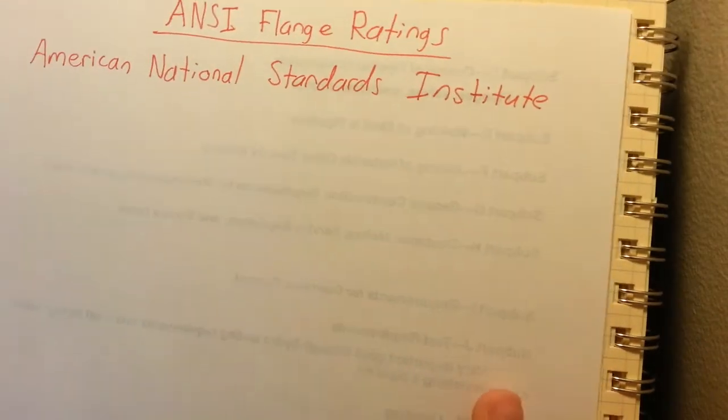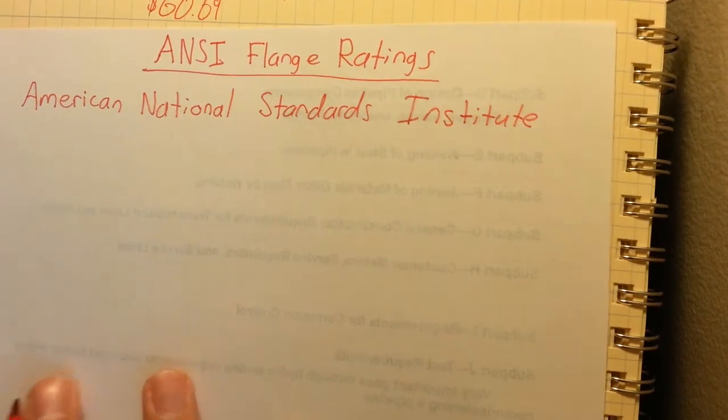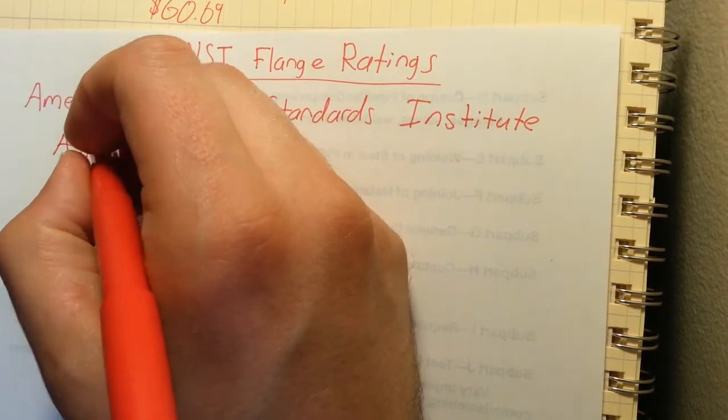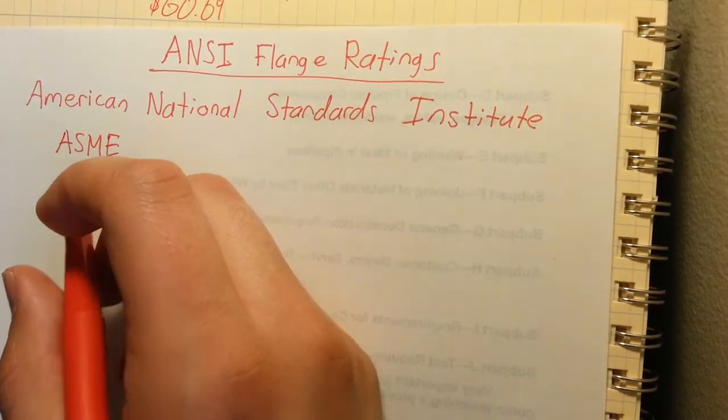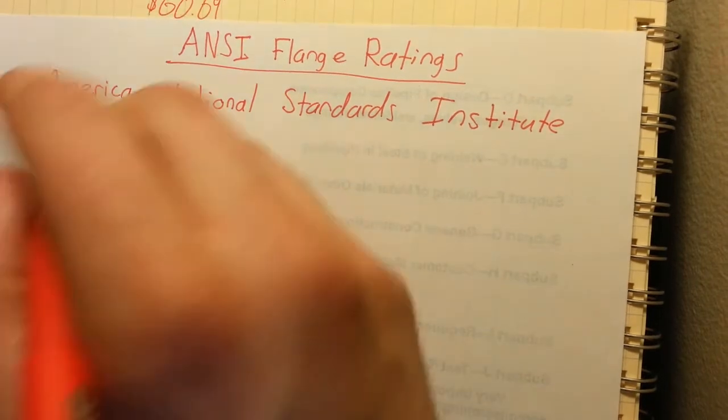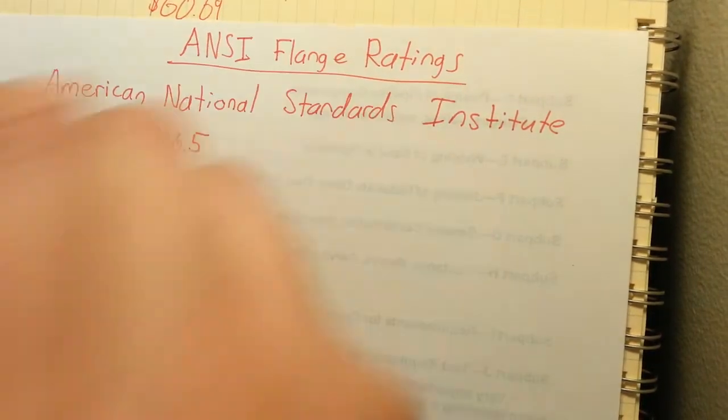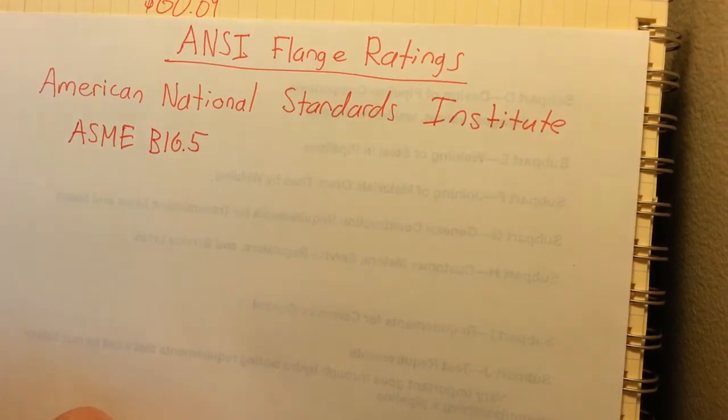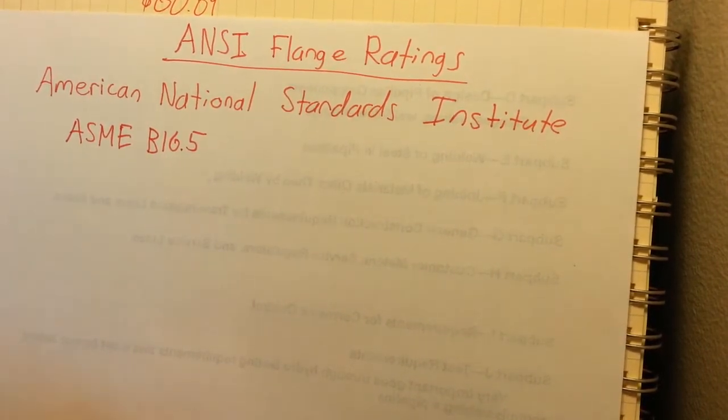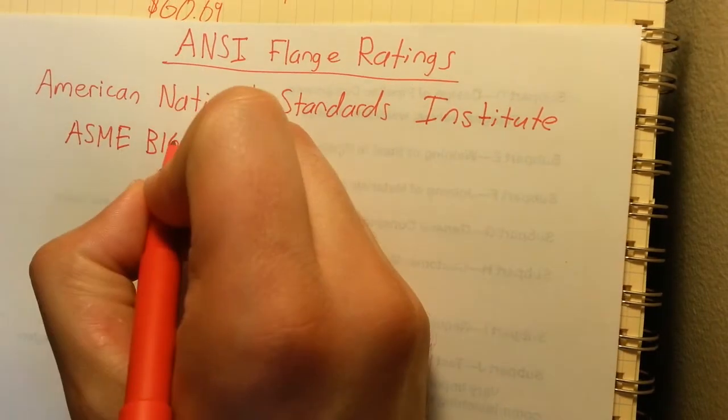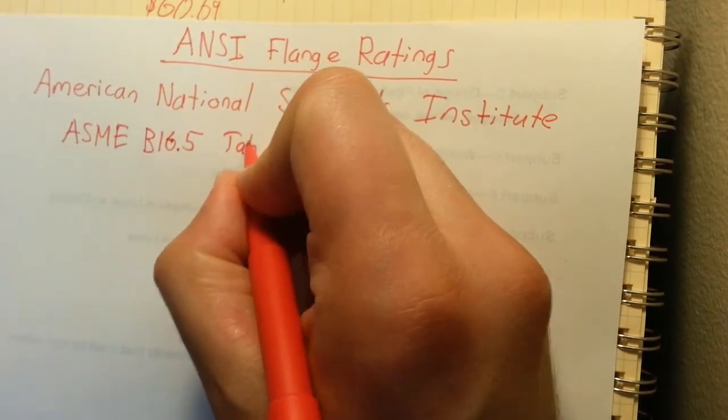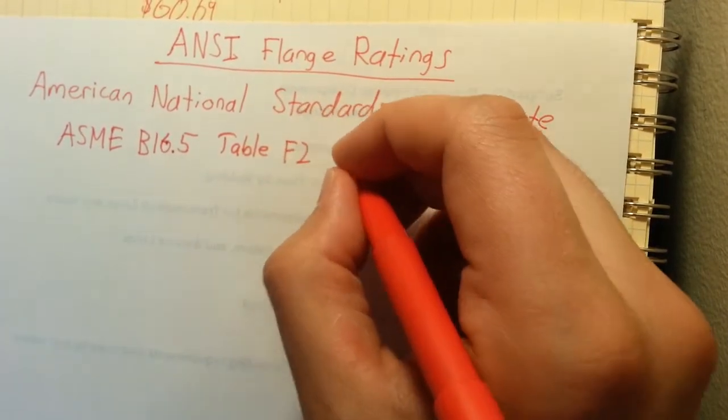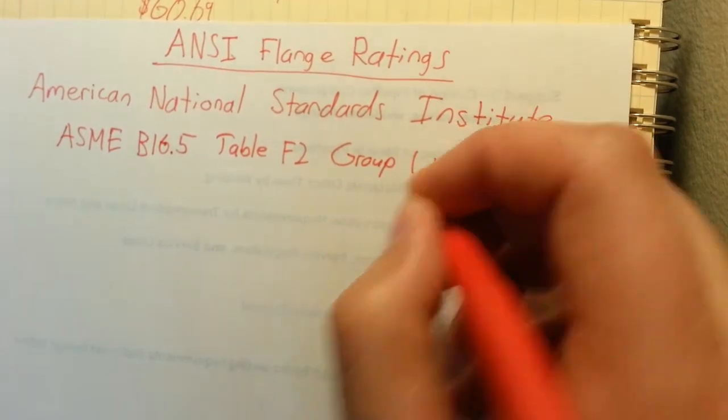And the code book you're going to use for this is going to be ASME, American Society of Mechanical Engineers, B16.5, and that is pipe flanges and flange fittings. So you're going to go to that code book, you're going to find table F2 and then group 1.1.